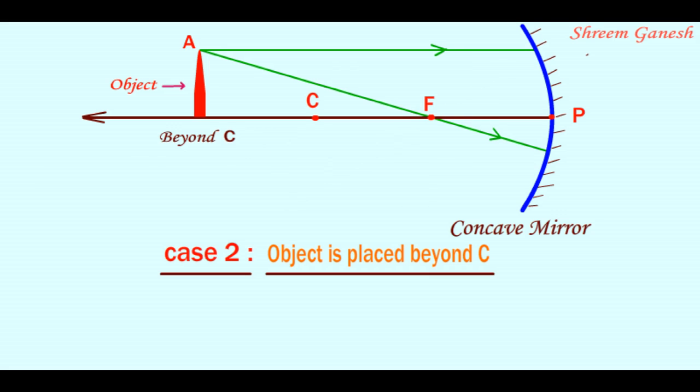These two reflected rays are converging rays and they intersect with each other in the space between center of curvature and principal focus.